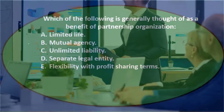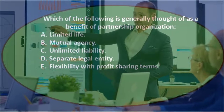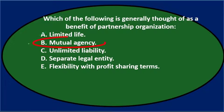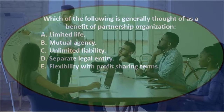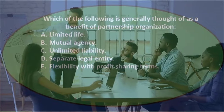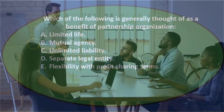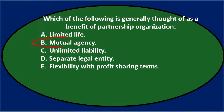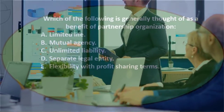We typically think of mutual agency as a problem, because it means multiple individuals can bind the business to different contracts. Due to differences in risk versus reward between the partners, there may be negative outcomes. So we typically think of mutual agency problems, though there could be benefits as well — it's part of being a partnership where two individuals are involved in decision-making.